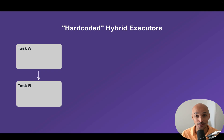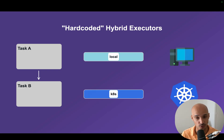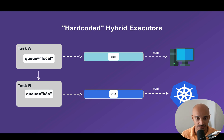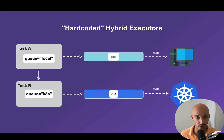Let me show you an example. You have task A and task B, and you have a local machine and a Kubernetes cluster where the Kubernetes executor is used. Now you want to run task A on your local machine — for that you can use the Q parameter with the value 'local'. And if you want to run task B in Kubernetes with the Kubernetes executor, you can use Q with 'kubernetes'. You just need to set the value corresponding to a specific executor for the Q parameter of a task.